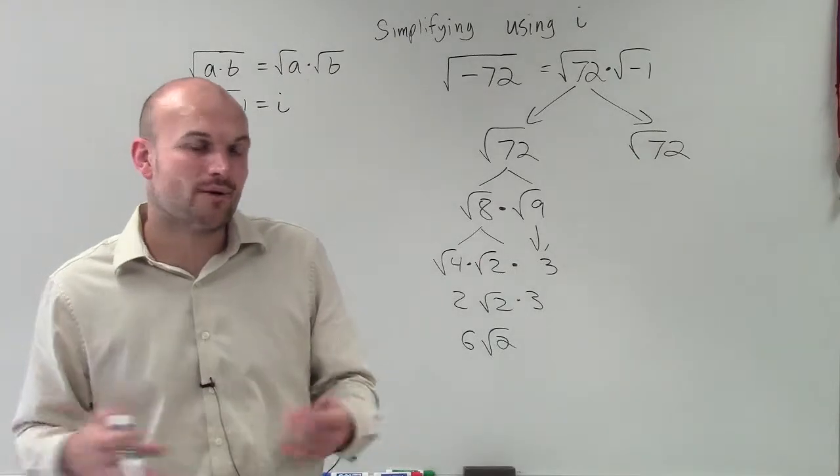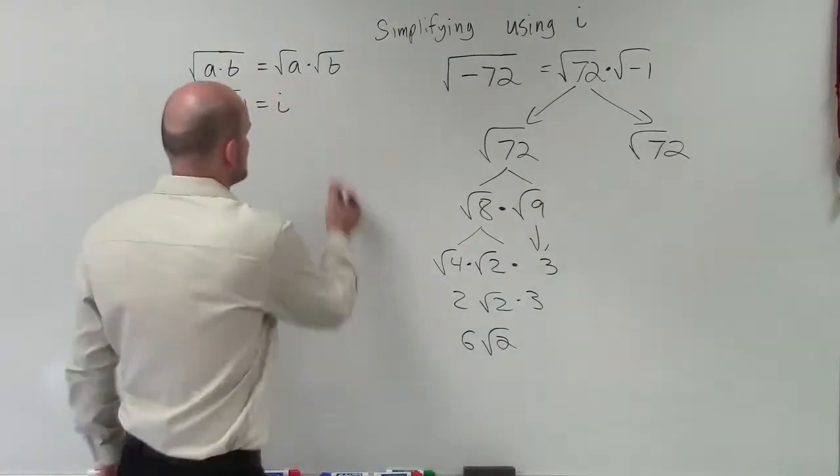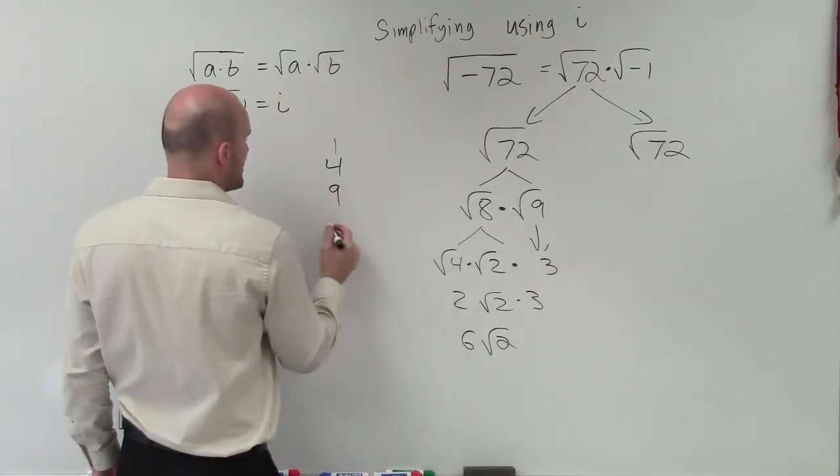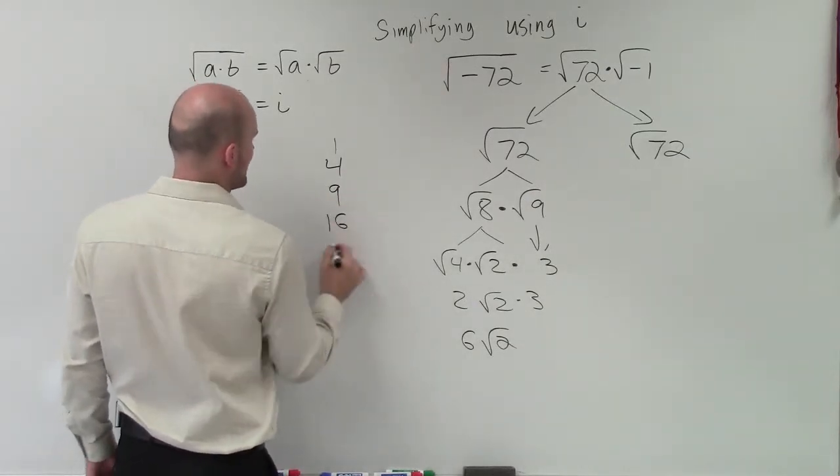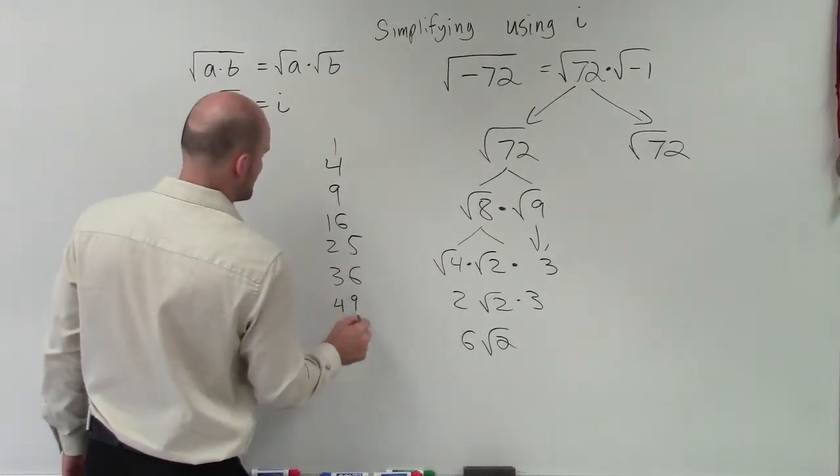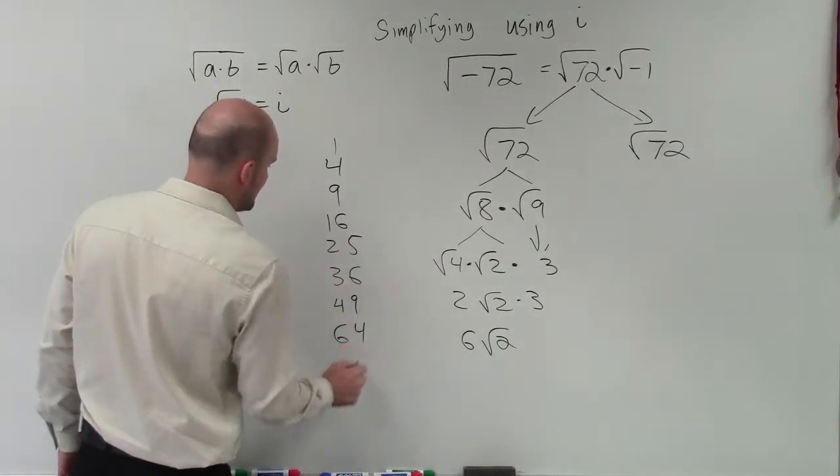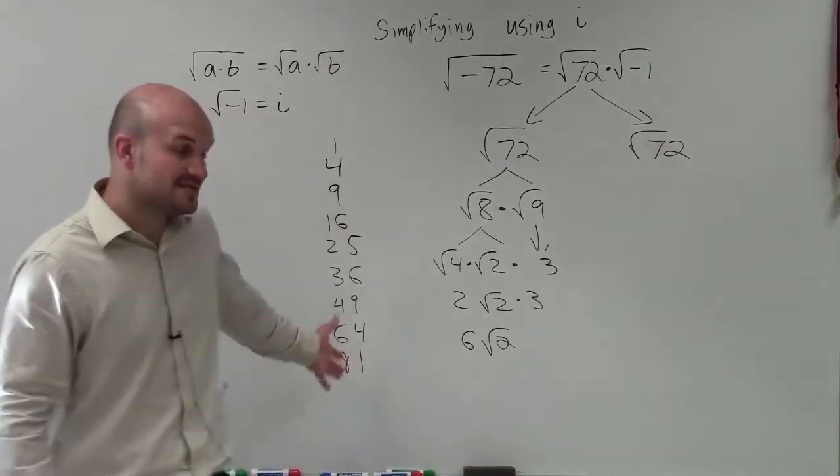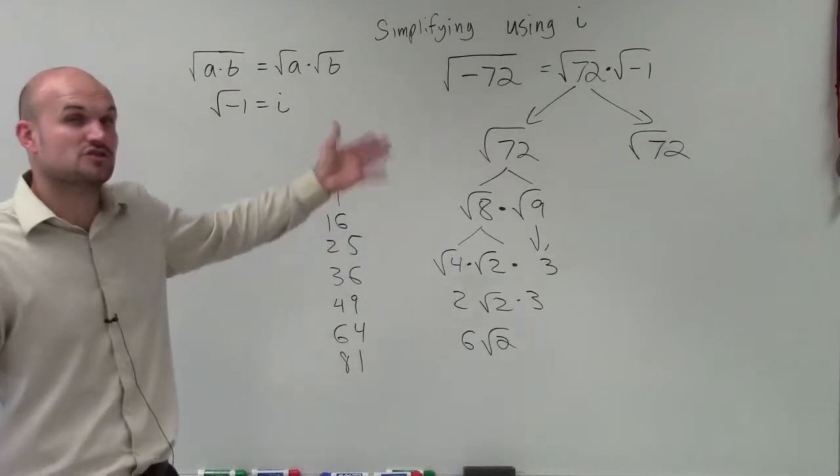So the hint that I want to give you is when you're determining out of your square numbers what is going to divide into 72, how to break it up, the best advice that I can give you is choose the largest number that is going to divide evenly into your number. And it has to be when we're talking about largest number, we're talking about square numbers.